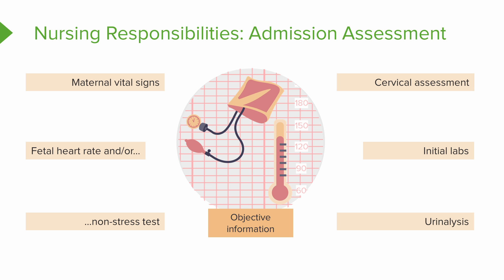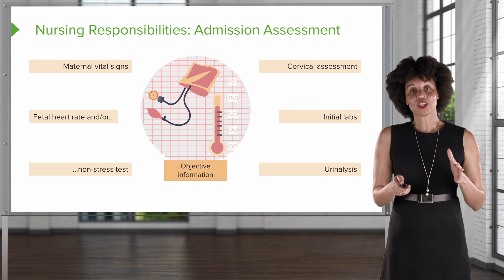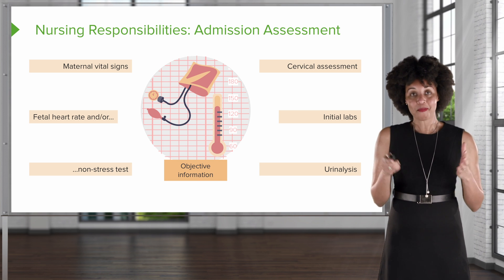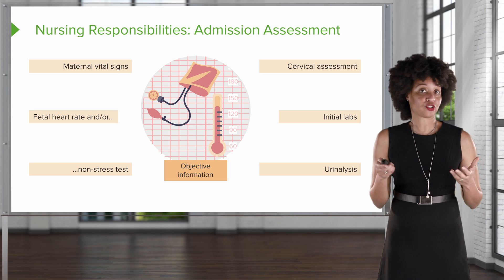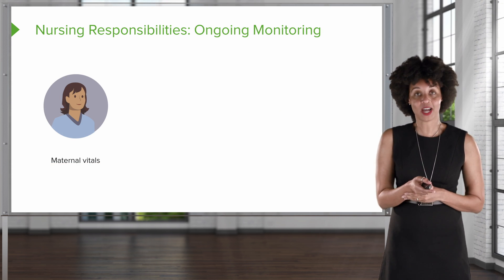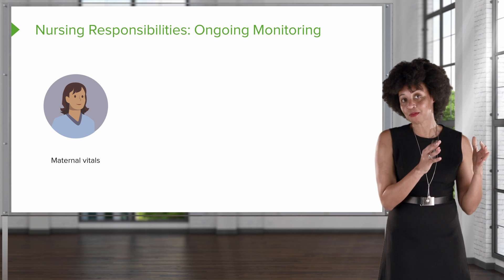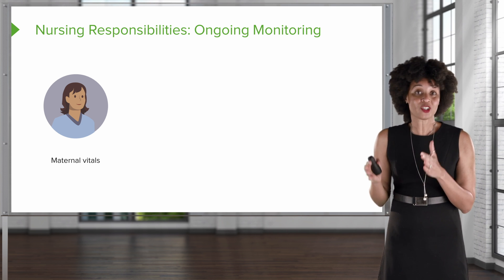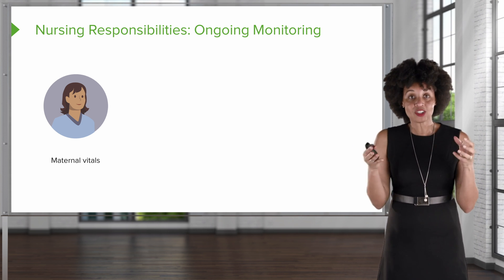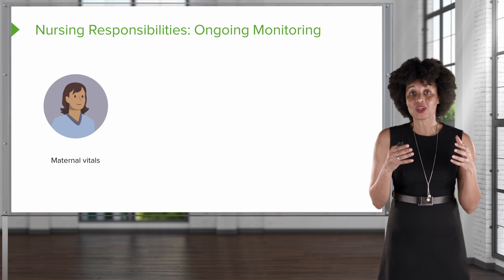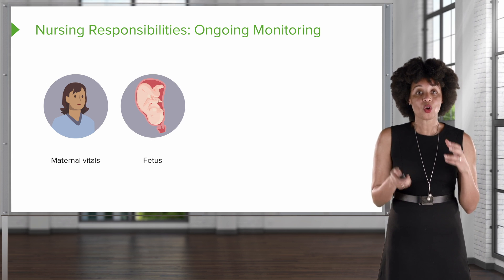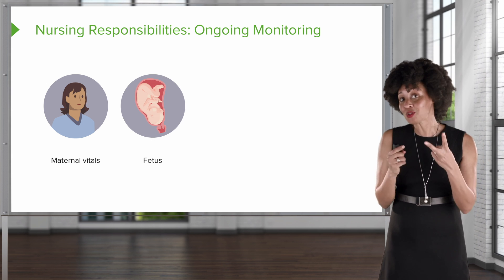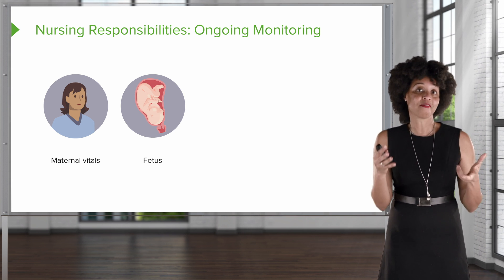We're also going to check the urine and look for things like infection and protein, because that could be signs of preeclampsia. Moving to ongoing assessments during labor: we're going to continue to check vital signs, as blood pressure and temperature may change over the course of labor. The frequency of vital sign testing depends on how well the patient is progressing. We also have two clients, not just one, so we have to monitor the vital signs of the fetus using the fetal monitor or by auscultating the fetal heart rate.